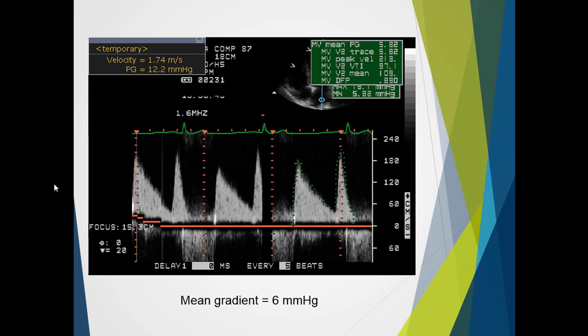And so, by doing a mean pressure gradient, we do a trace of the flow through the mitral valve, so we can see early diastolic and atrial contraction components there. And then we come up with a mean pressure gradient of 6 mm of mercury.